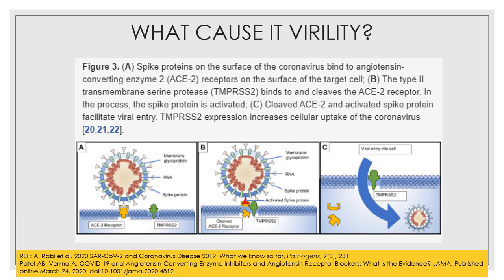Once the spike protein binds to the ACE2 receptor, a transmembrane serine protease binds and cleaves the ACE2 receptor and activates the spike protein. This process facilitates the viral entry into the host cell.